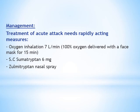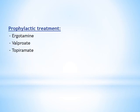To manage cluster headache, treatment must be of rapid onset. We can give 100% pure oxygen delivered with a face mask for 15 minutes — the patient usually responds within 5 minutes. Or we can use subcutaneous sumatriptan injection, or sumatriptan nasal spray may also help. Prophylactic treatment for cluster headache is similar to migraine prophylaxis, including ergot alkaloids and triptans, valproate, or topiramate.